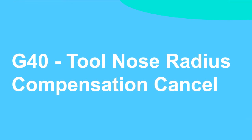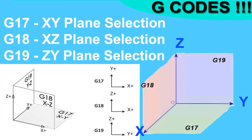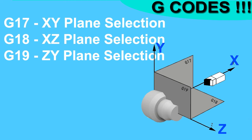G17, G18, and G19 are modal codes used for selection of planes — the plane in which machining will be performed. G17 selects the XY plane, G18 selects the ZX plane, and G19 selects the YZ plane. For turning operations we use the ZX plane, so G18 is used. For milling the top face of a workpiece, we use G17 (XY plane).